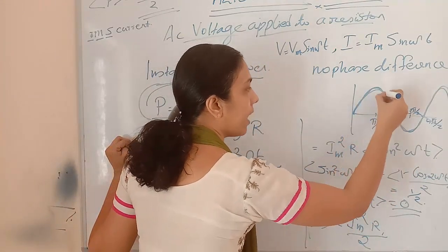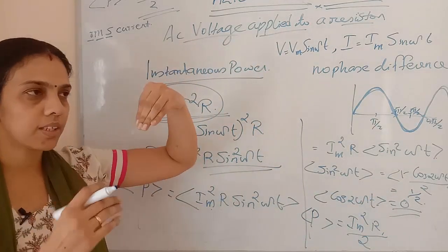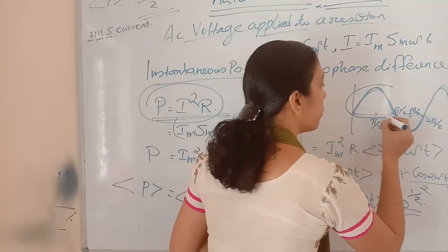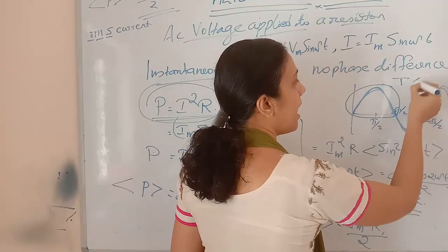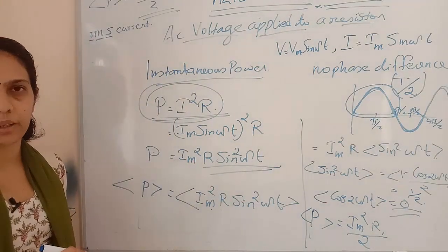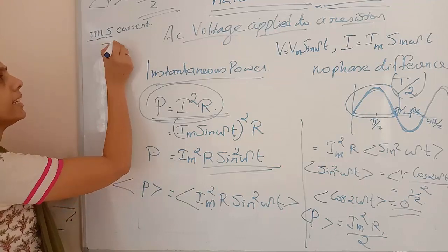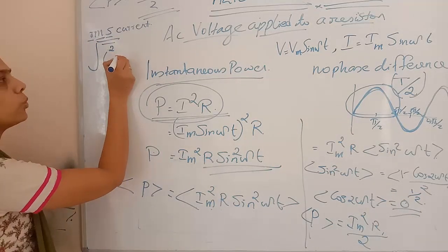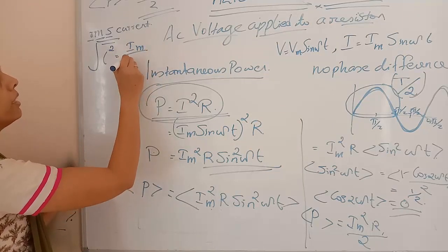In one complete cycle, the first half and second half cancel each other, so we consider t/2 seconds for the mean. After squaring, taking the mean, and then the square root — the root mean square value — we get Im divided by √2.